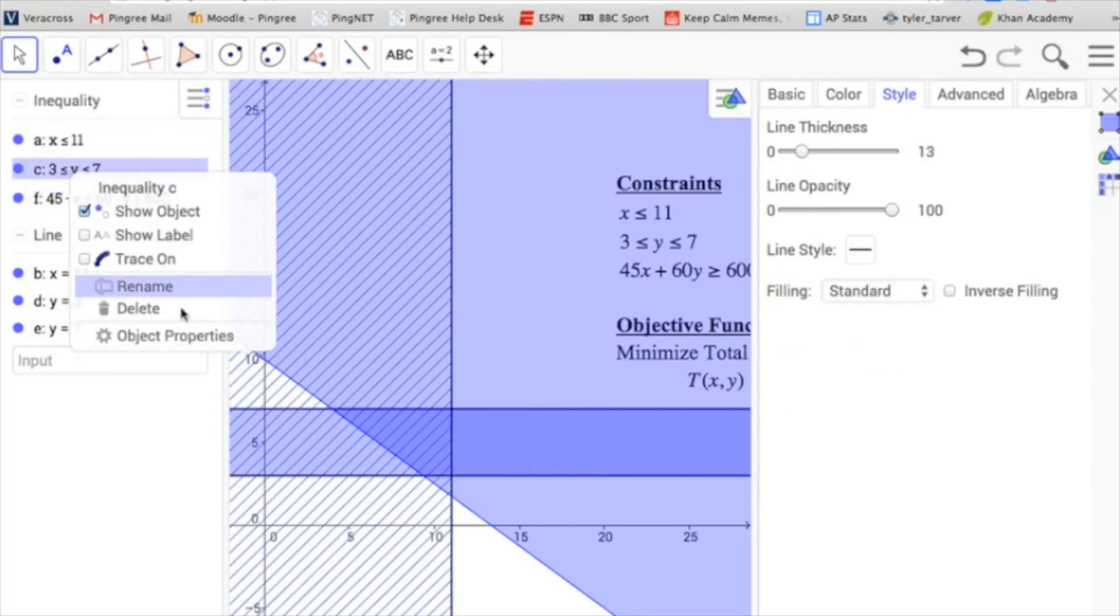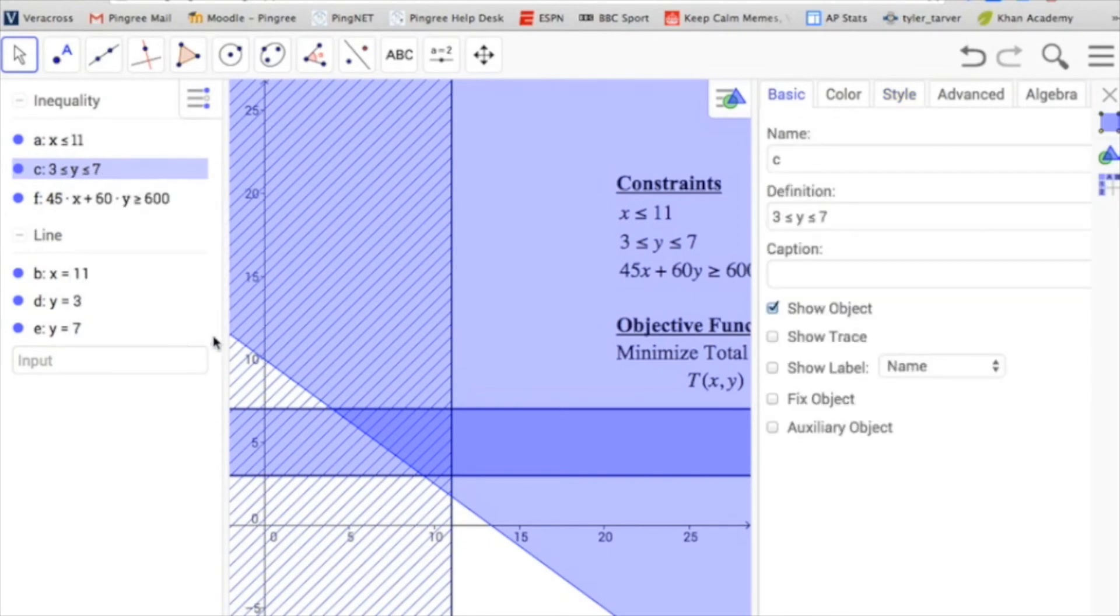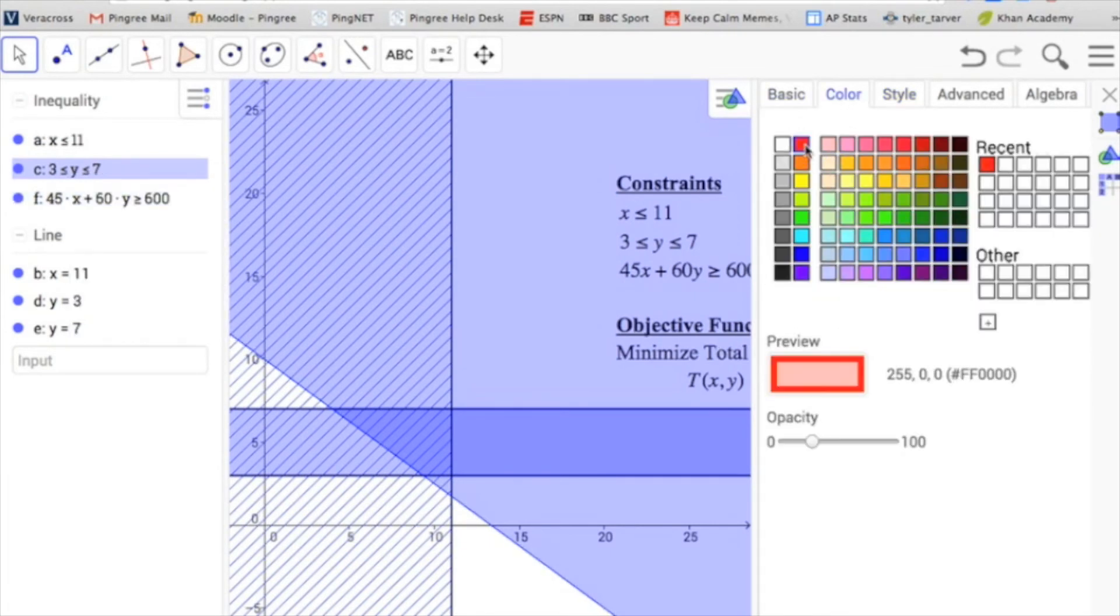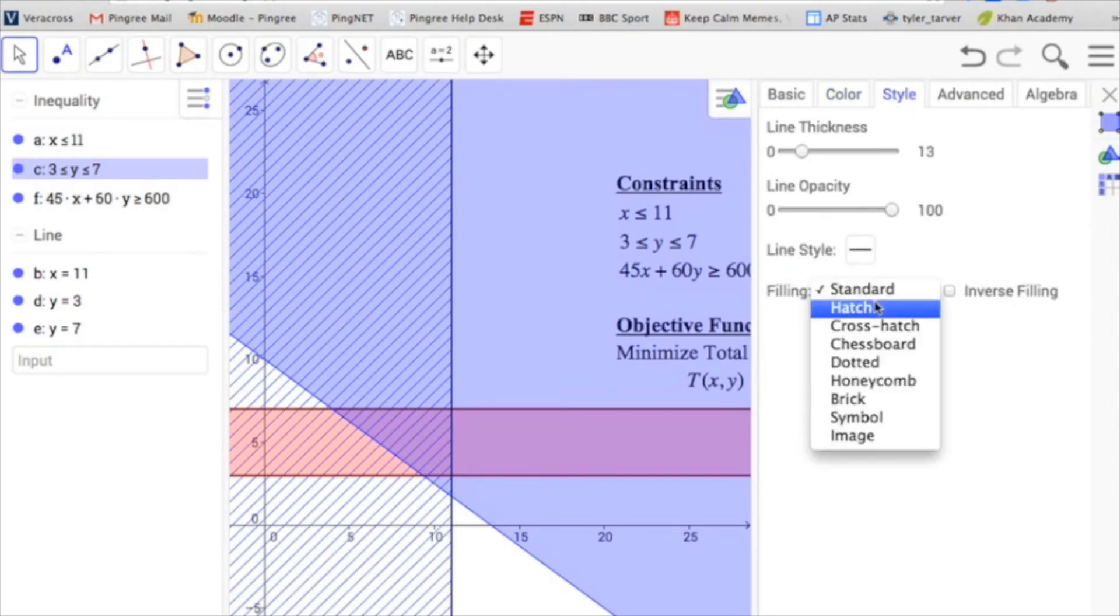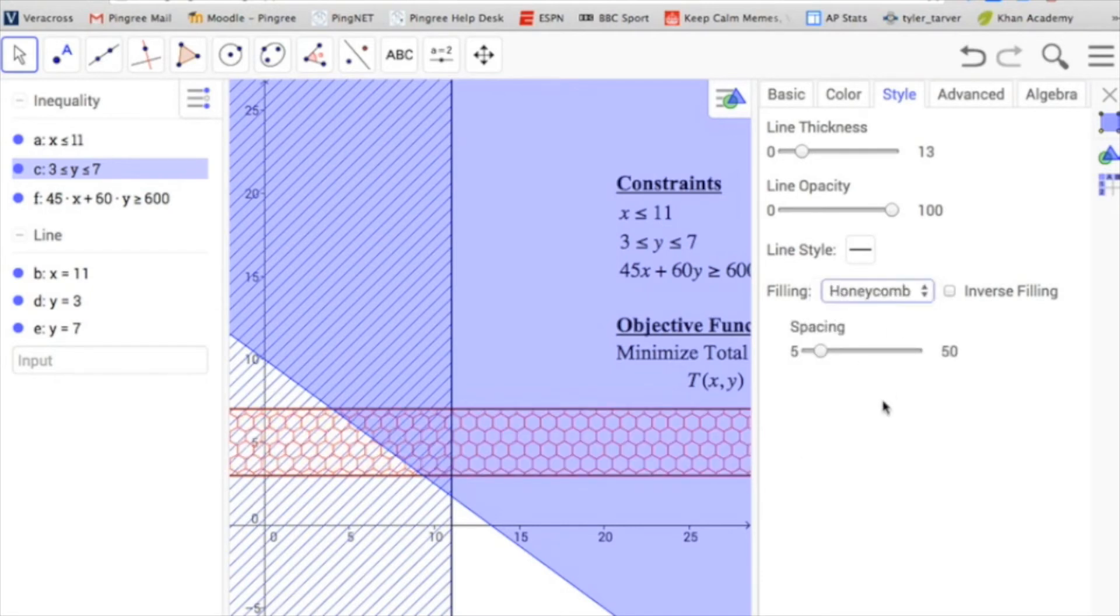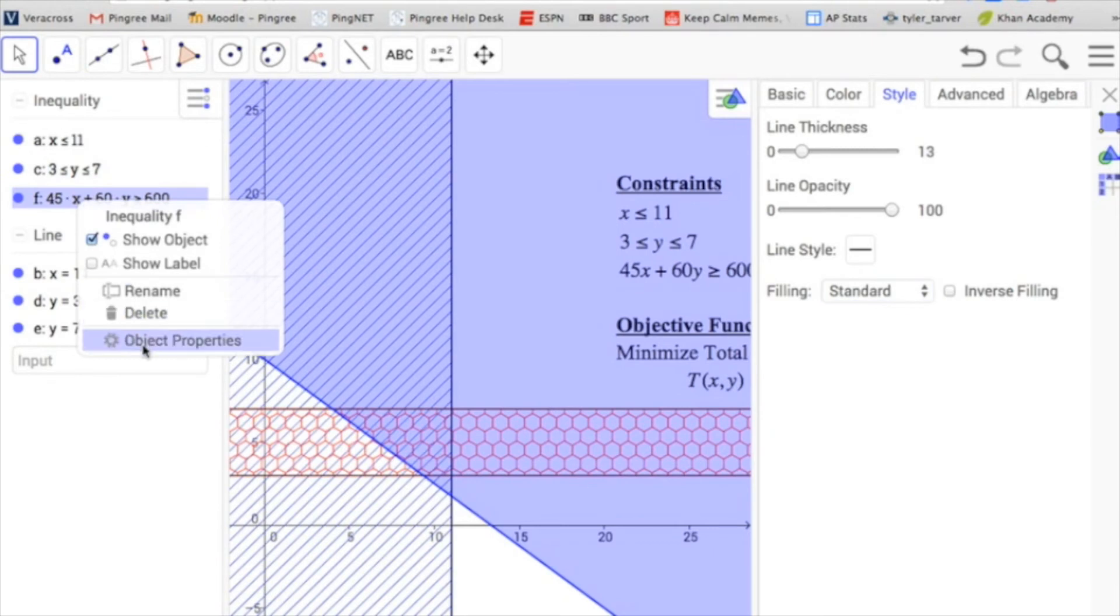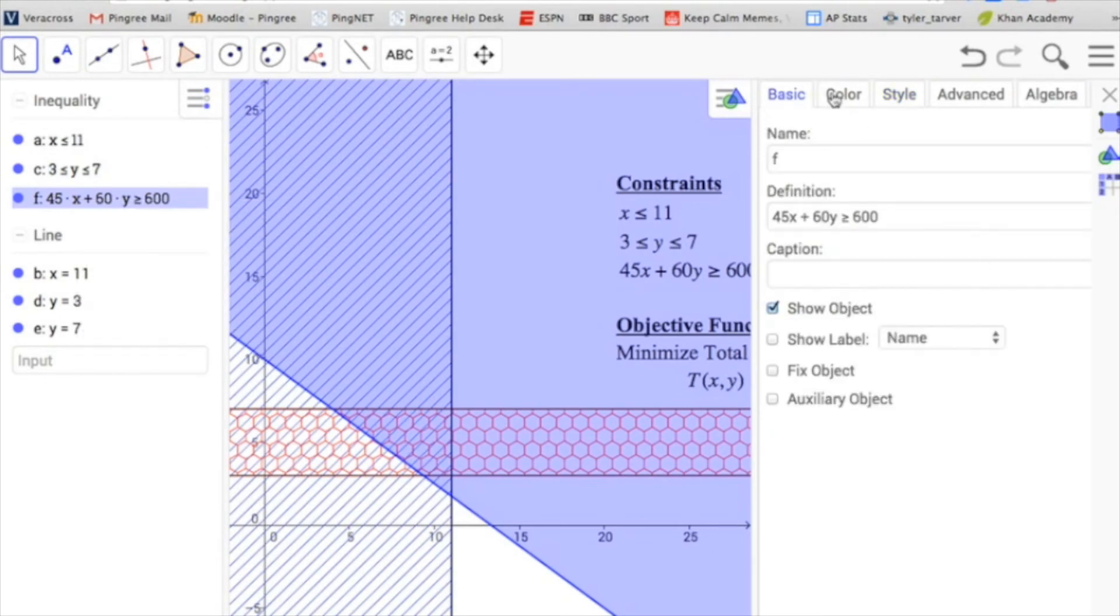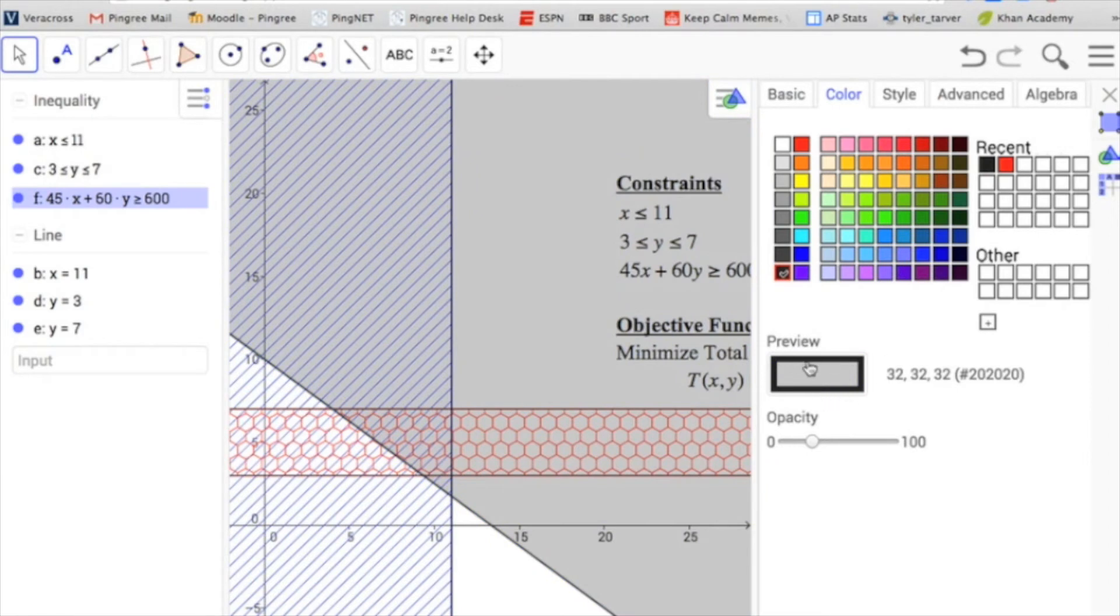Now if we click on our second one, second inequality, we can go over. Let's change the color this time. Let's make it red. And let's do a honeycomb pattern. That sounds interesting. Now my third one, let's adjust the object properties color. Let's make it black. And we'll just leave it as shaded for now. So now I can close out that menu.